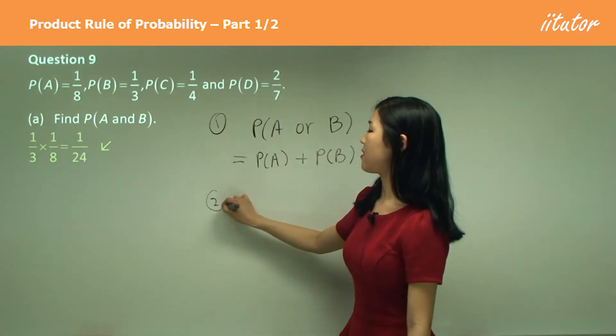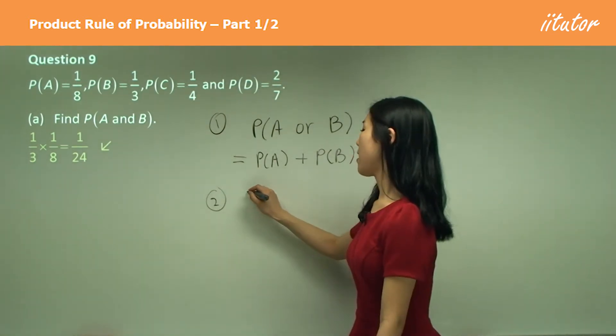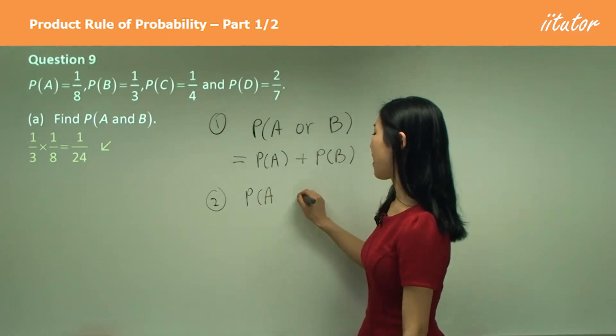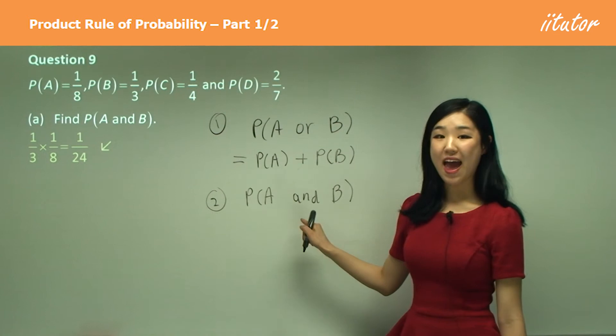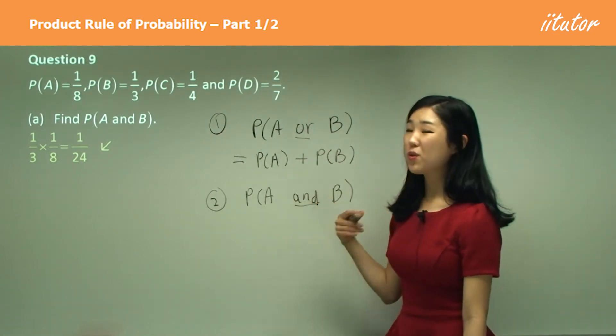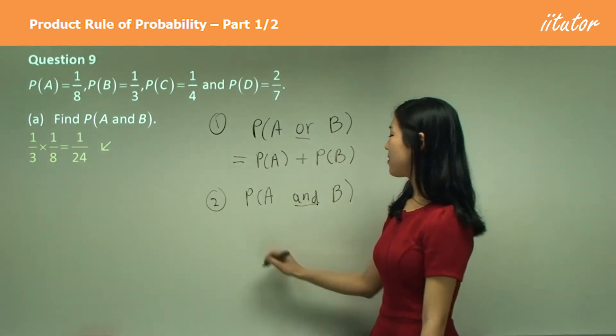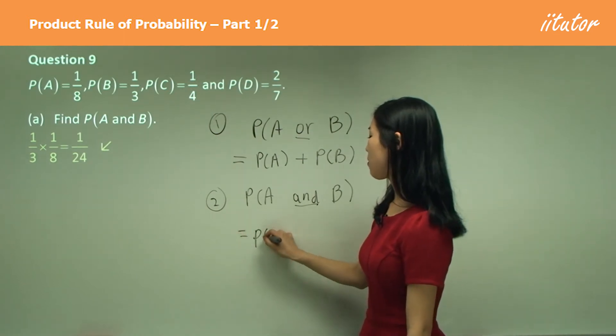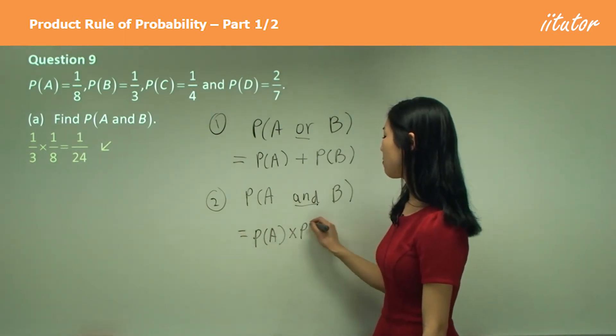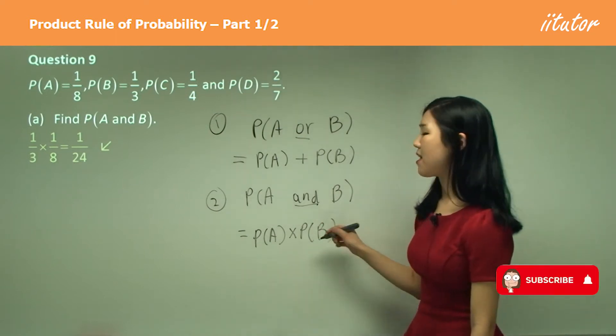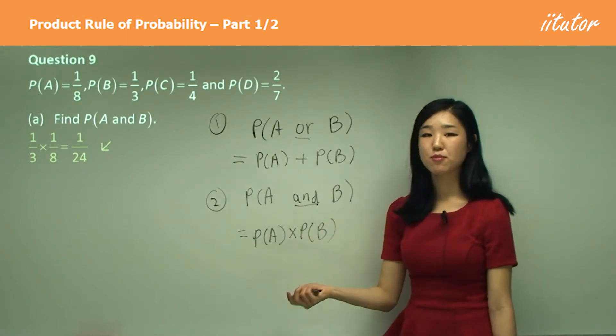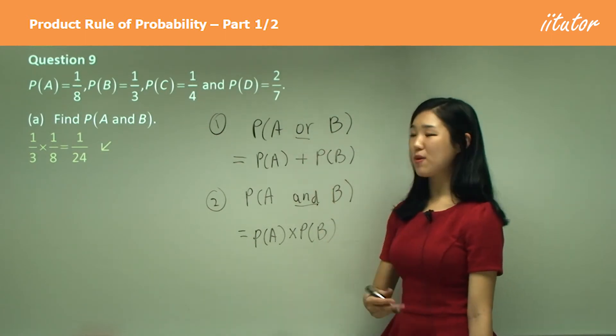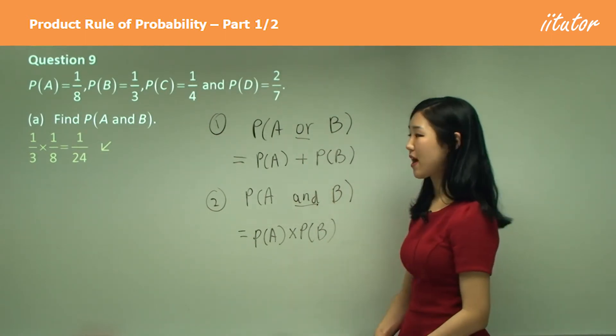Now the second case is this case here. When the probability of, we want to find the probability of A and B. And. So or, and. What do you think will happen here guys? If it's and, you simply do the probability of A times the probability of B and that's all you need to remember. Or plus and times, just remember it like that and that's pretty much it. So that's why here, we multiply the two probabilities and we get one on 24.